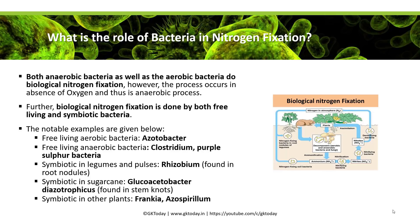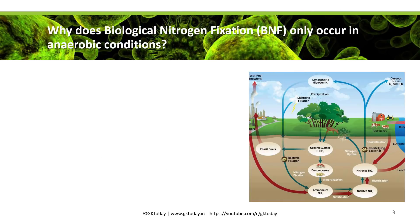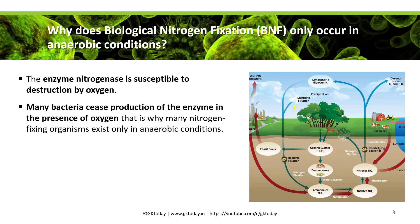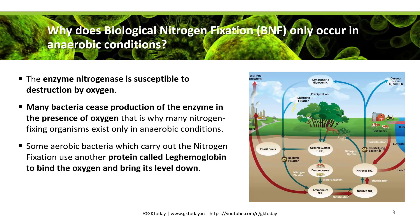Symbiotic bacteria present in the stem nodules of sugarcane is Glucoacetobacter diazotrophicus. Symbiotic bacteria in other plants are Frankia and Azospirillum. Biological nitrogen fixation only occurs in anaerobic conditions because the enzyme nitrogenase is susceptible to destruction by oxygen — it reacts in the presence of oxygen and ceases production. Some aerobic bacteria that carry out nitrogen fixation use another protein called leghemoglobin to bind the oxygen and bring its level down.